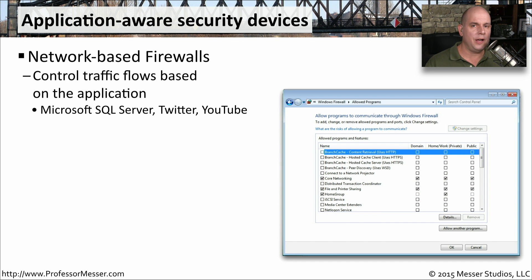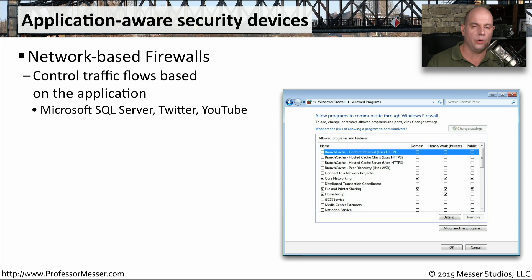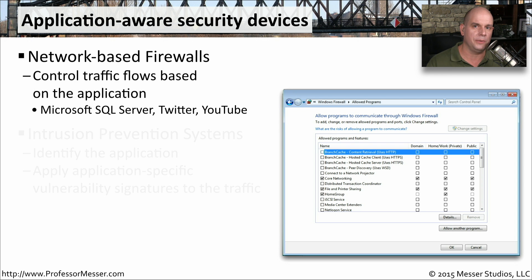Because your firewall is now application aware, it can make decisions not just on port number, but on the application or the way the application is working. You might allow or disallow Microsoft SQL Server, or Twitter, or YouTube, or even subsets of those applications. For example, you may be able to view Twitter but not post to Twitter, because your application-aware firewall knows exactly the difference between those two actions.